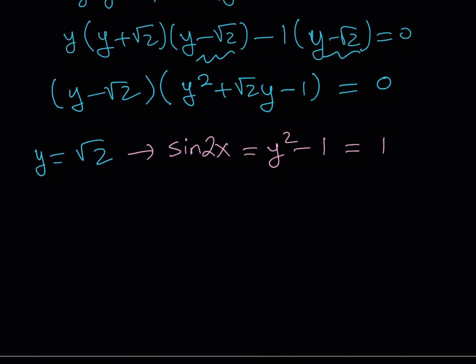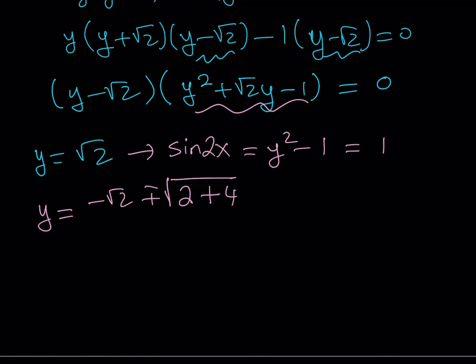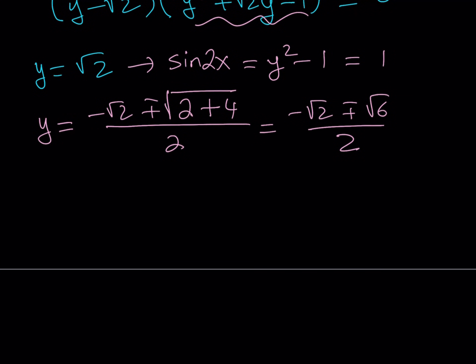Let's take a look at the other values from the quadratic equation. Using the quadratic formula, we get negative b plus or minus the square root of b squared — but that's going to be negated by the negative 1 — plus 4 times 1, that's going to be a 4, divided by 2a. This becomes negative root 2 plus or minus the square root of 6, divided by 2. Notice that root 6 is greater than root 2, and negative root 6 is less than negative root 2, so one of these values is actually less than negative root 2.